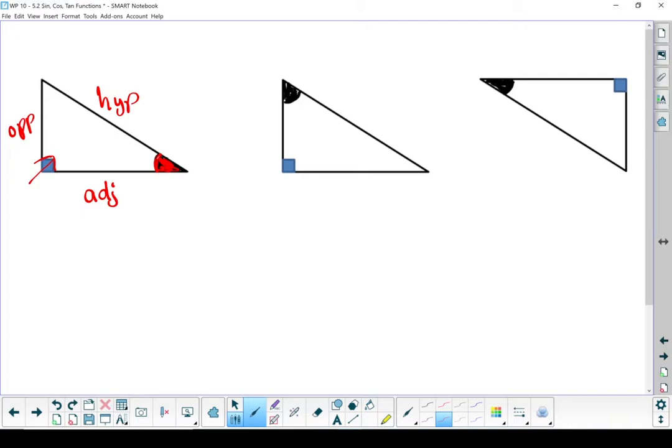Take for example this next triangle. Once again, starting with the hypotenuse, but now I'm looking from this corner up top. It's the same triangle as before, I'm just looking from a different corner. That's the corner I'm looking from, this must be my opposite side. Which leaves the leg that is beside the angle I'm looking from, that's my adjacent side.